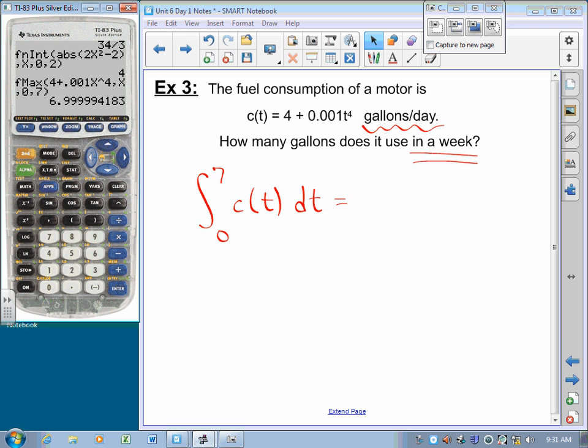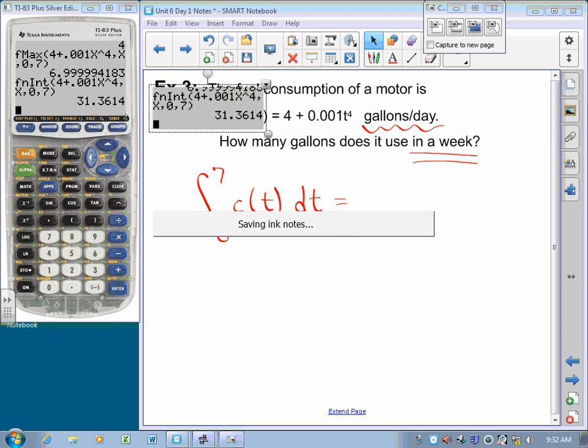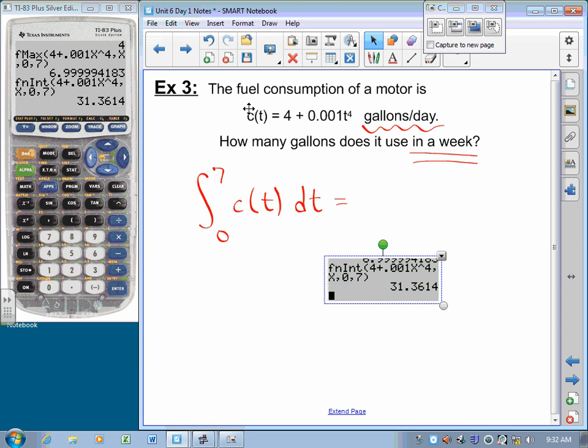That sounds low. It sounds like it should be like 30-something. Oh! Ha ha! Sorry, folks at home. Yep. If you choose f max instead of f and int, then you don't get an integral. You get a function max. Yeah, that sounds like what I should get. Right. That sounds like it. We round to three decimal places because we are AP.